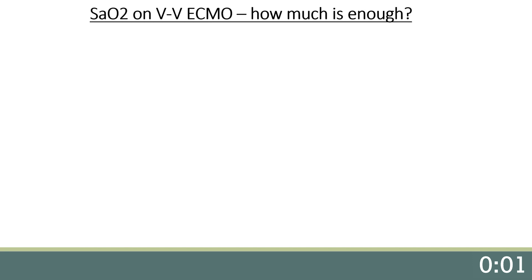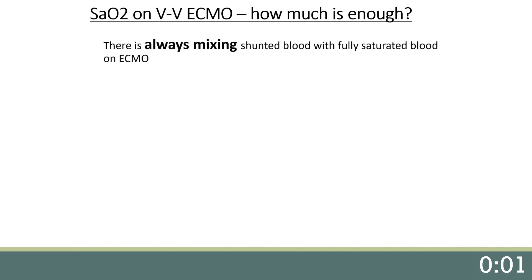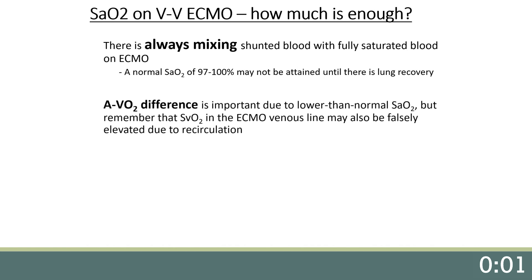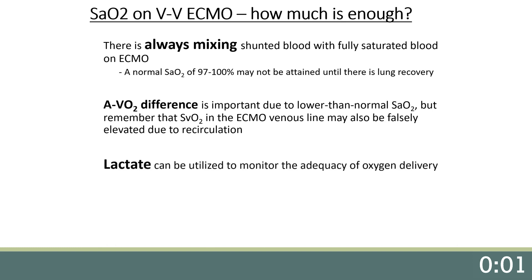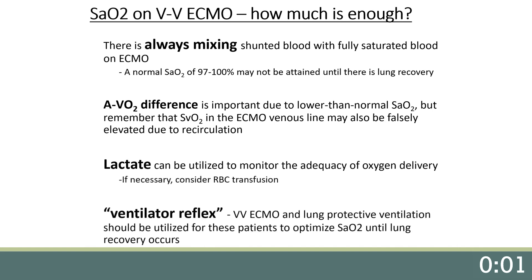What are the clinical considerations for hypoxemia on VV ECMO? Because shunted blood is being mixed with fully saturated ECMO blood, arterial saturation of 97% to 100% may not occur until there is lung recovery. The AVO2 difference is important in these patients due to the lower-than-normal SAO2. Remember that the SVO2 from the ECMO circuit may be falsely elevated due to recirculation, so the clinical status of the patient must be closely monitored. Lactate can be utilized to monitor adequacy of oxygen delivery. VV ECMO and lung protective ventilation should be utilized to optimize SAO2 until lung recovery occurs, avoiding aggressive ventilation strategies.